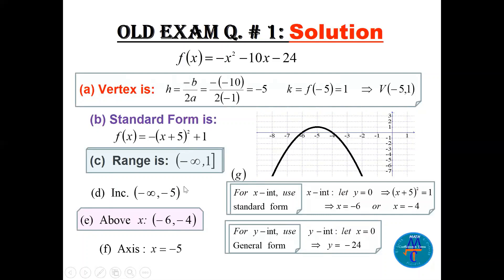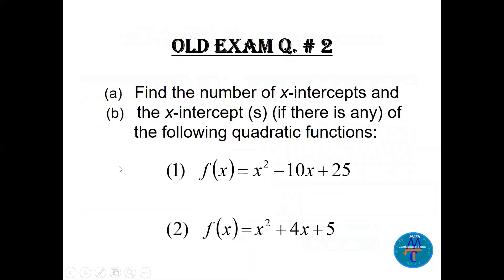There are many parts here but they are simple. For the y-intercept, use the general form and put x = 0, so y = -24. It's not shown in the graph but the parabola cuts the y-axis at -24. The axis of symmetry is x = h, so x = -5.